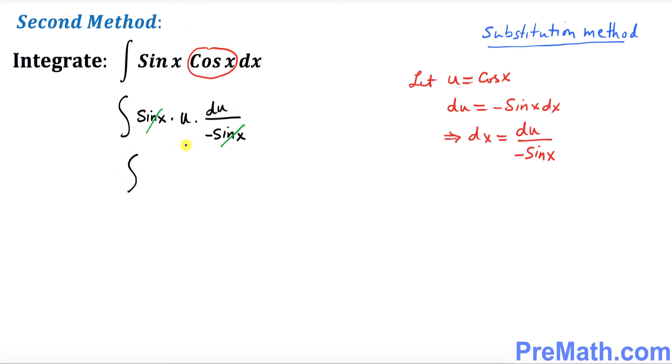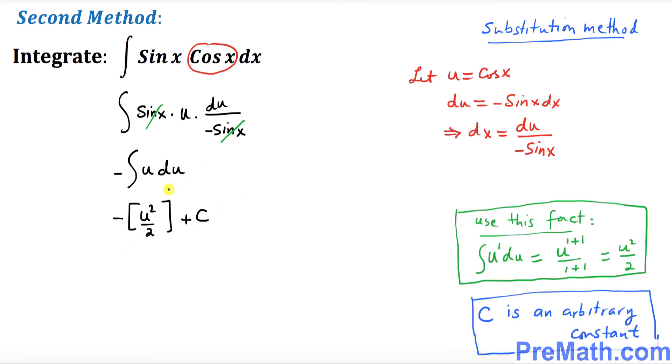So we pretty much got negative sine outside, put down u times du. And now once again, negative sine is outside. This is going to be simply u squared over 2, whatever this thing is, and then plus c where c is an arbitrary constant. And finally what we got is u at the very first place was cosine of x, so that's going to become negative cosine squared of x over 2 plus c and that is our answer.